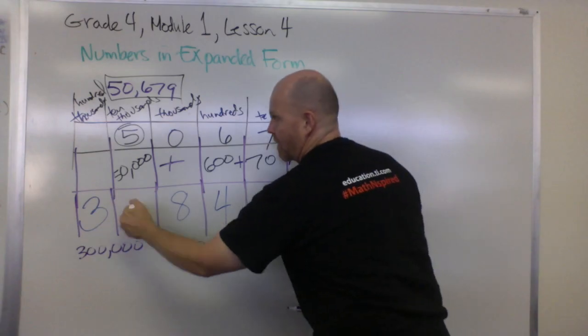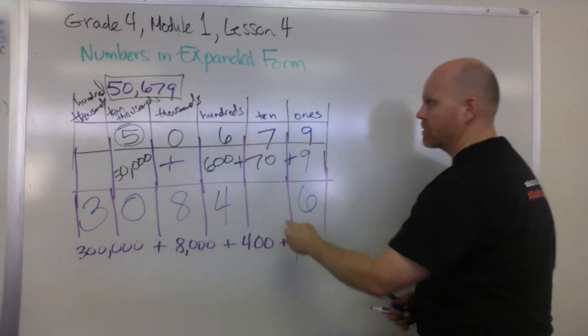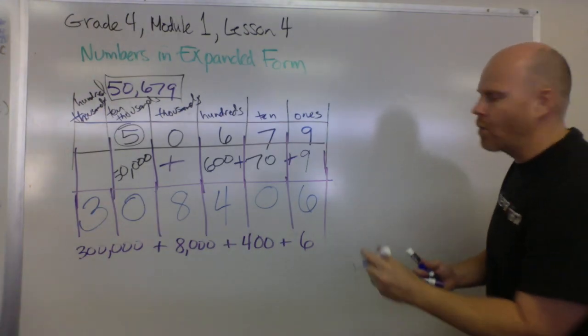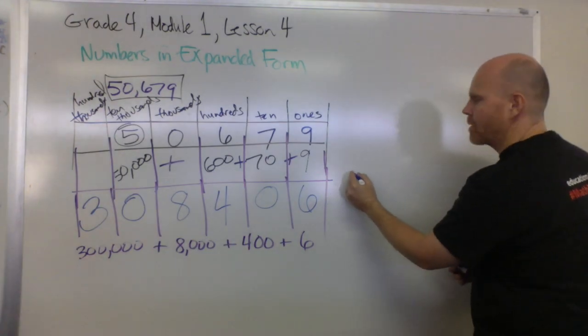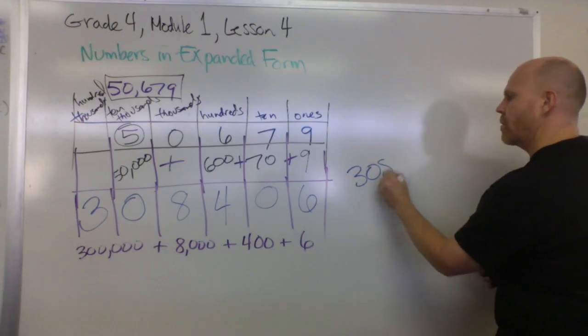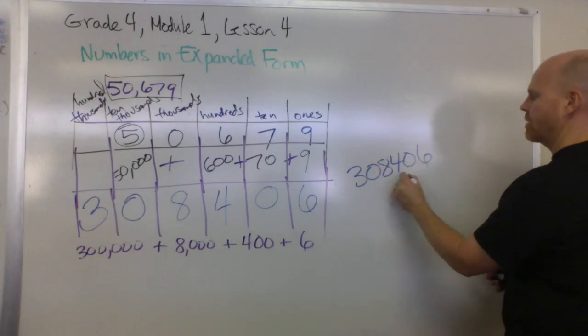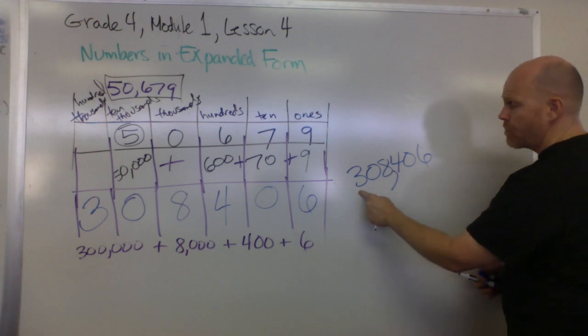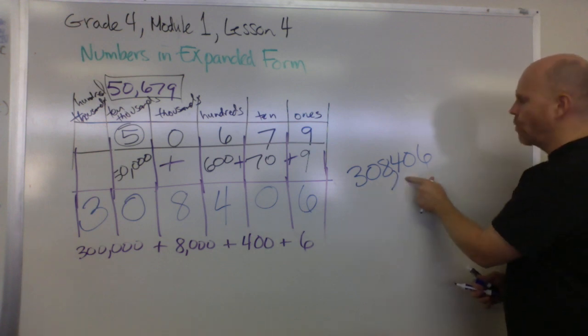And this means we have zero copies of the 10,000, and we have zero copies of the tens. So in traditional form, we would write this number as 308406, and we would put the comma right here. Properly said, this is 308,406.